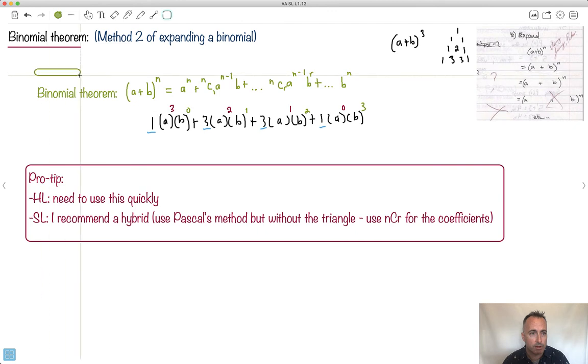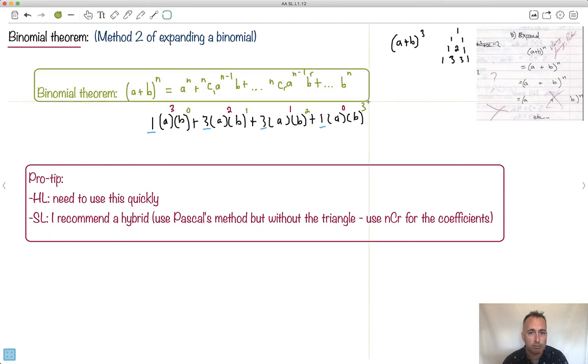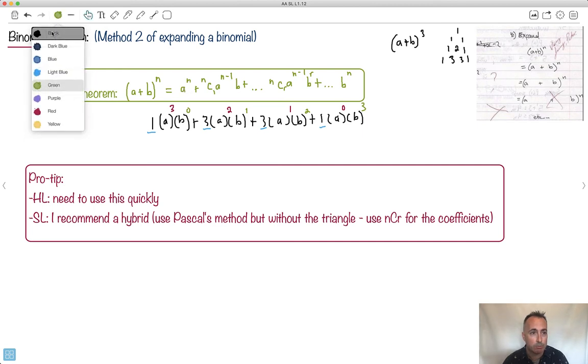Now, this formula right here, you get on your formula book list. You don't have to memorize it. I just want to show you that this is actually telling you what I've just done. Watch it very carefully. First of all, let's look at this. The very first term, if I actually did it, let's say I actually wrote it all out. 1 times a cubed times b to the 0. Well, b to the 0, isn't that just 1? Anything to the 0.